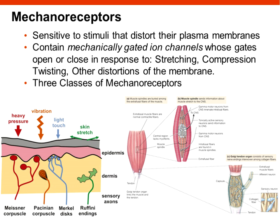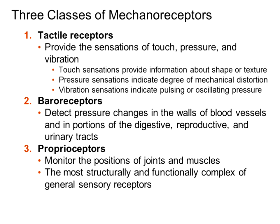Mechanoreceptors have many examples. Laminated corpuscles and tactile corpuscles were how we divided them in Chapter 5. Now we see that certain receptors are better at responding to vibration, some to light touch, some to pressure, stretch, skin stretch, or vessel stretch — and some around muscle cells play a role in protecting muscle, tendon, and bone from over-contraction. Mechanoreceptors fall primarily into three classes: stretch receptors, proprioceptors, and skin receptors for tactile function.